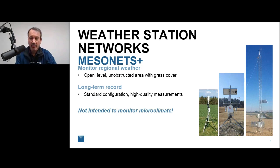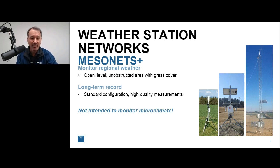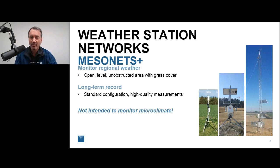These measurements have a long-term record, fairly standard configurations, and regular maintenance, so they tend to be fairly high quality. But by the very definition of a mesonet, they're not intended to monitor the microclimate. As Ag WeatherNet director, we frequently had people asking to put a station next to their orchard or vineyard — and that actually isn't the intention of these networks. They're meant to serve a regional need.